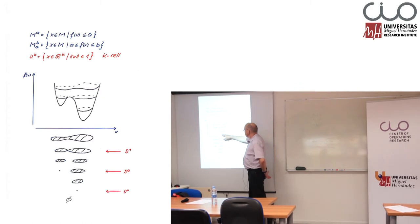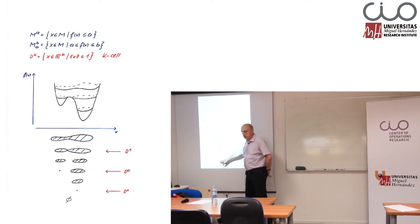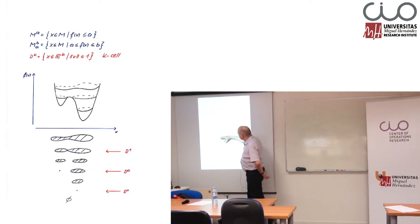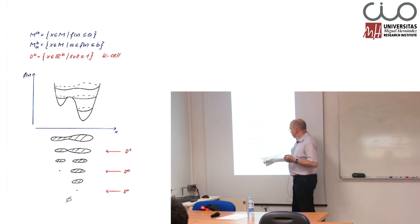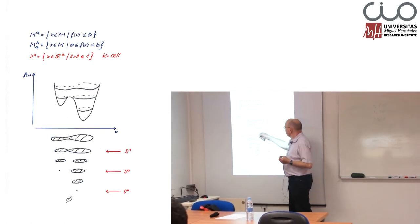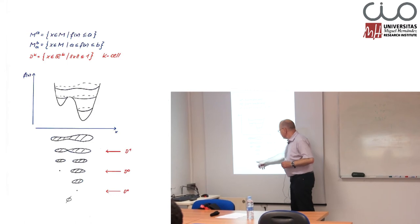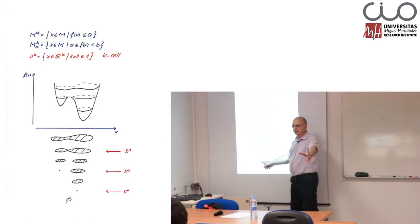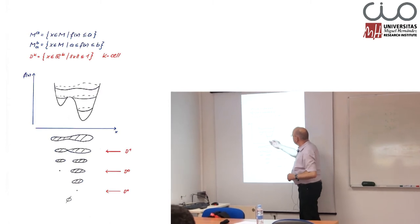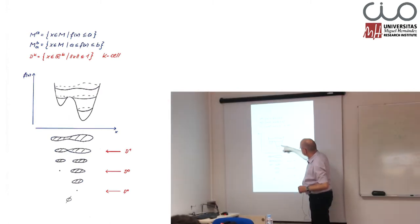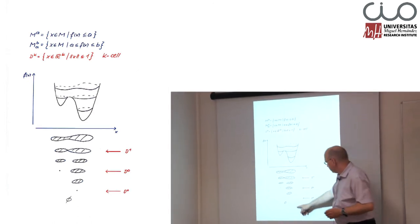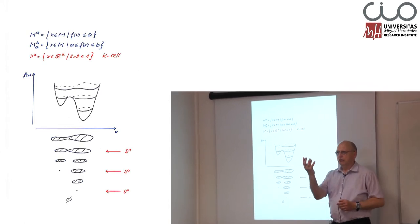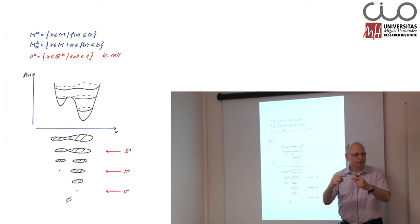If we are at a level which is less than the level of this minimizer, then the corresponding level set is the empty set. Then we go up and come to this first minimizer. The level set becomes a point — so we have a change of the topological structure from the empty set to a non-empty set. If we go further up, then we get this set here as the corresponding level set. Topologically, they are the same. The point and this set can be continuously deformed one into the other with a homotopy.